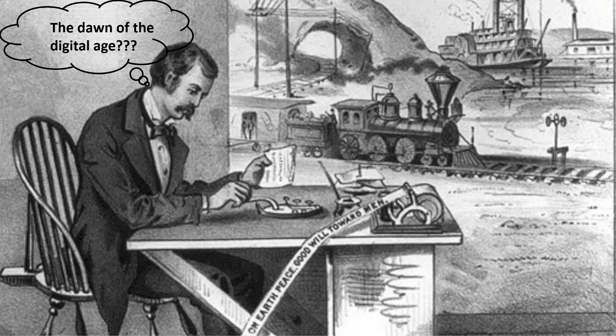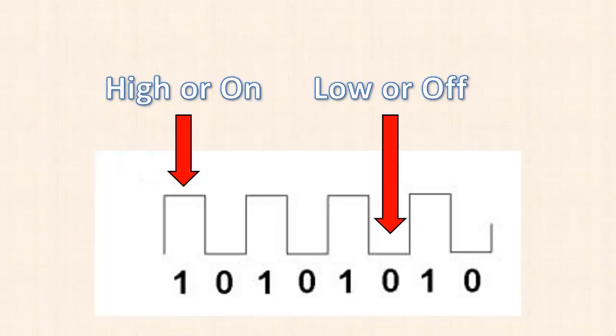But most of us use computers, smartphones, and a myriad of other digital or partly digital devices every day. In a binary digital system, there are only two possibilities, just like our telegraph system.